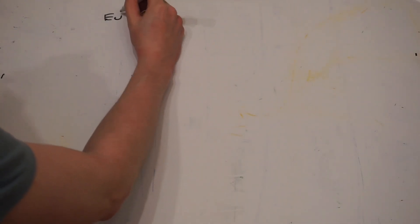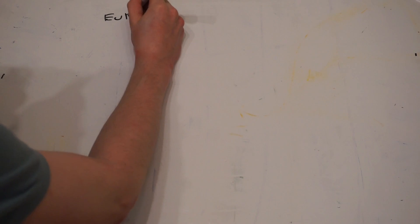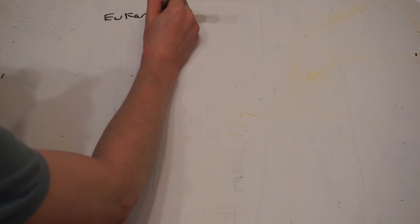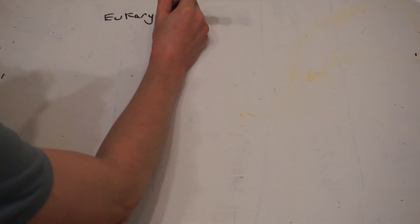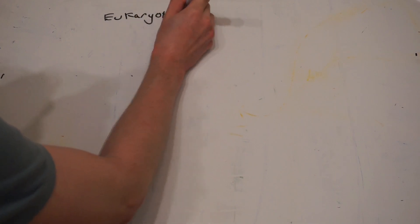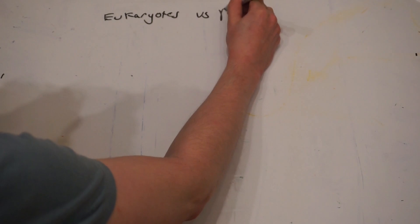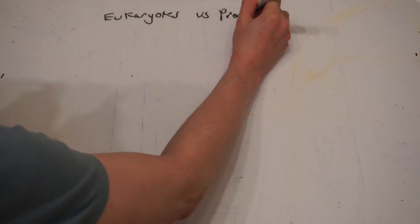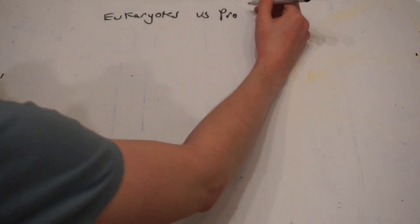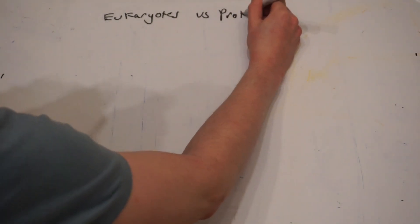Hello and welcome to Biology Explained. Today we're going to be looking at the difference between prokaryotic and eukaryotic cells as part of the GCSE biology revision series.